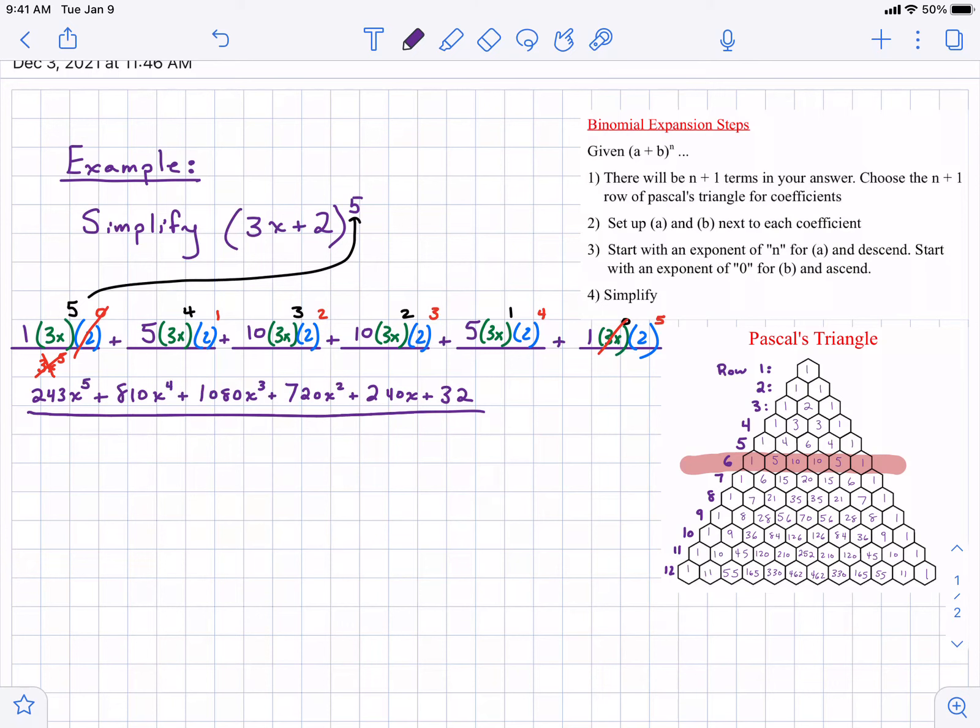Start by finding out how many terms are in your answer. I'd recommend doing something like this work-wise. Even with this, even though we're not doing box method, it can get a little messy. So give yourself plenty of space. Set up your platforms one more than the exponent you're given. Separate your two terms into little parentheses.